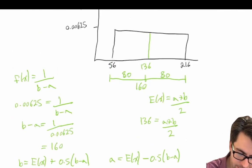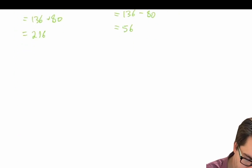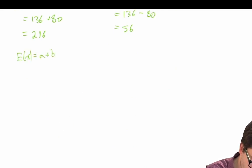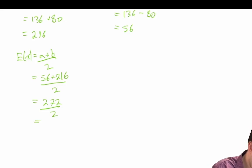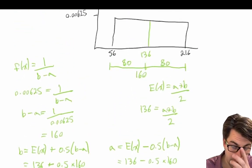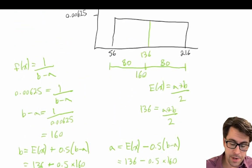Now, if we want to double-check, we can verify: the expected value is equal to a plus b divided by 2, which is equal to 56 plus 216 divided by 2. That gives us 272 divided by 2, which is 136. So our expected value is exactly the same, confirming we have good values for a and b.